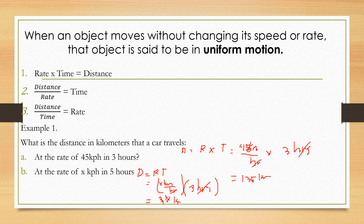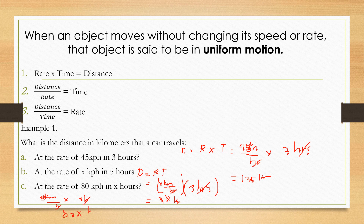For letter C, the rate is 80 kph and the time is x hours. Using d = rt, we have 80 km/hr times x hours. The hours cancel, giving us 80x kilometers. So for letter A the answer is 135 km, for letter B it is 3x km, and for letter C it is 80x km.